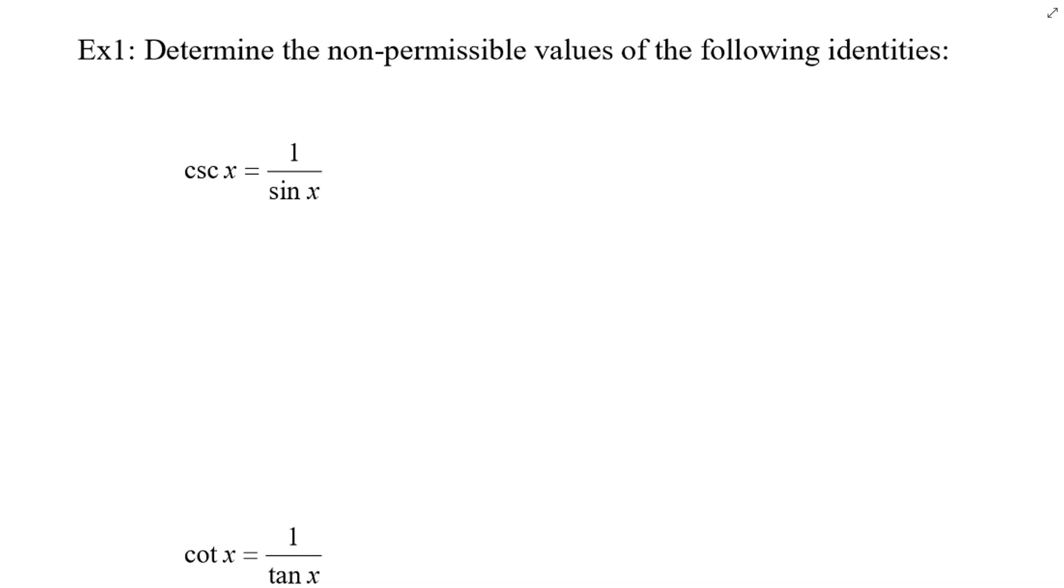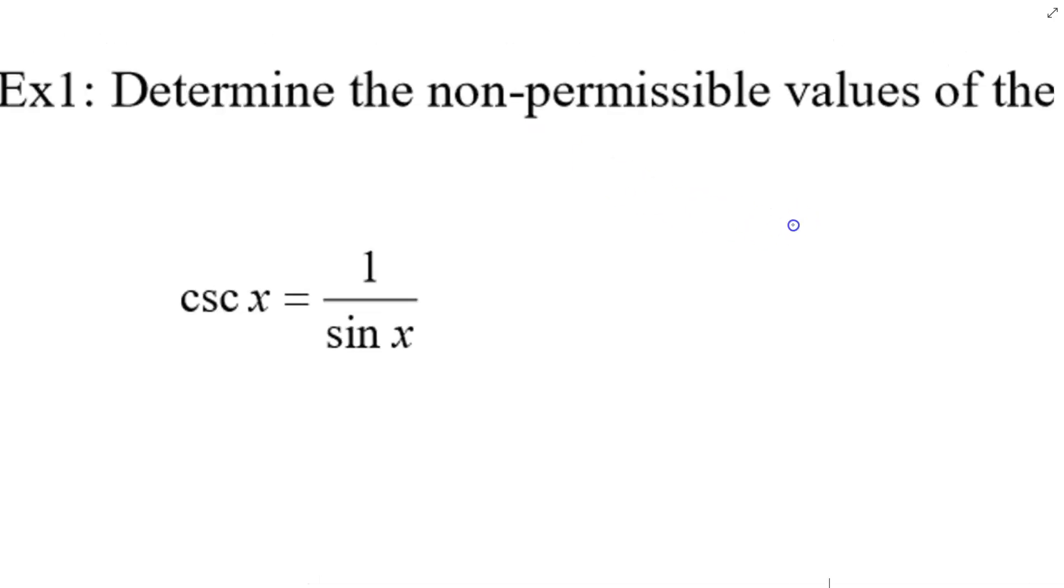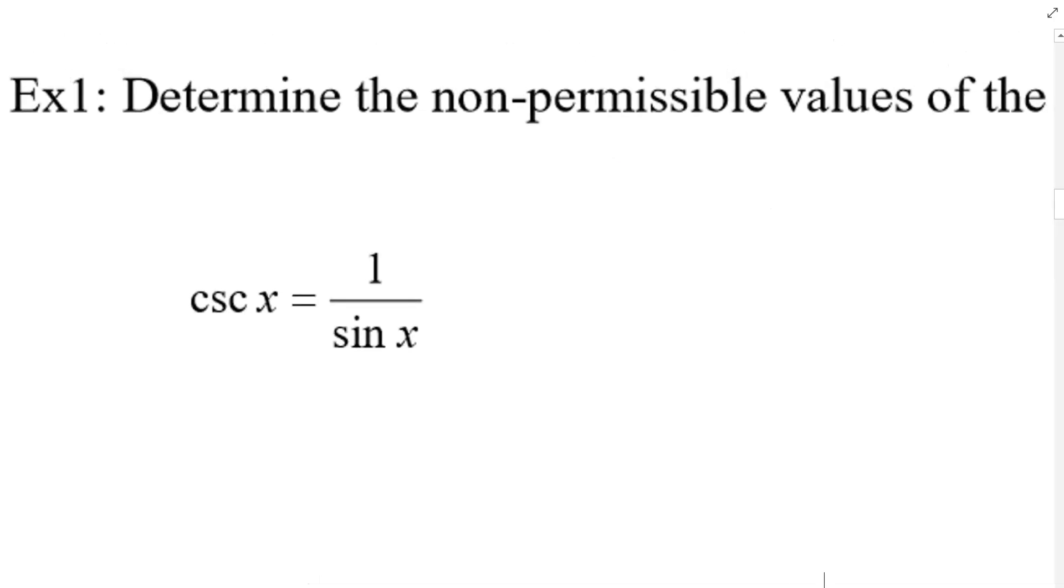How do we find the non-permissible values? Just like we said, look for zeros in the denominator. So in this case, the only denominator we have is that sine x.